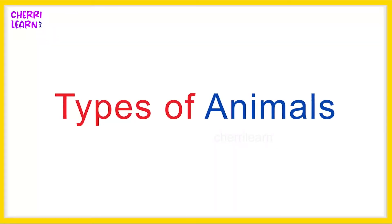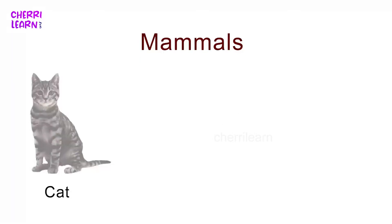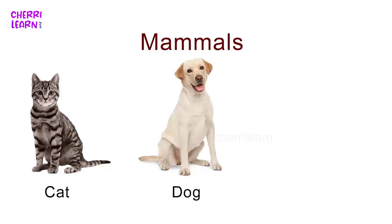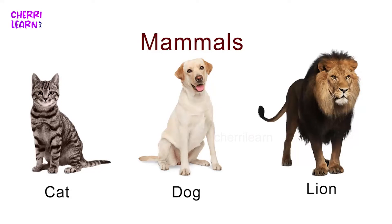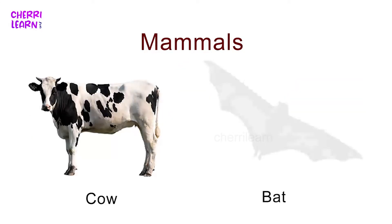Types of Animals. Mammals are animals which give birth to their young ones and they feed milk. Examples include Cat, Dog, Lion, Cow, and Bat.